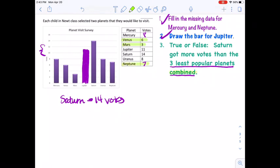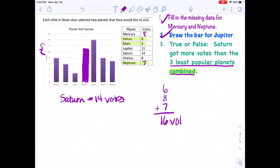I'm asked to combine these three and then compare it to Saturn. So I can see that if I'm going to combine them, I need to add six plus three plus seven. And I like to look for doubles or tens when I'm adding numbers. And I see a 10 here. Seven plus three is 10. I can easily add 10 plus six. And I know that the three least popular planets combined got 16 votes.